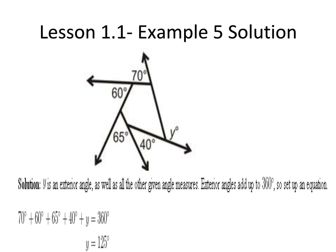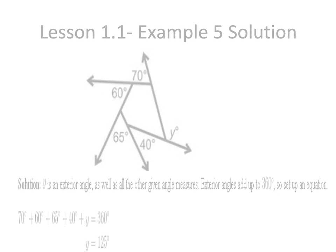We can set up the equation. 70 degrees plus 60 degrees plus 65 degrees plus 40 degrees plus Y equals 360 degrees. Solving for Y we find that Y equals 125 degrees.